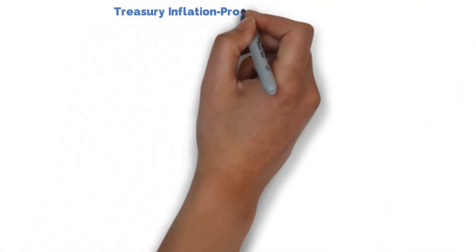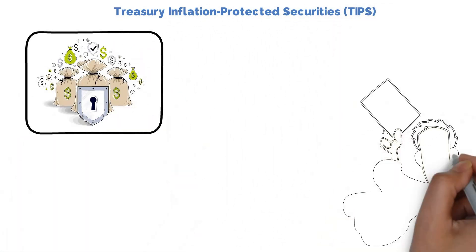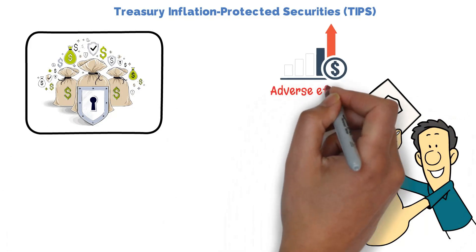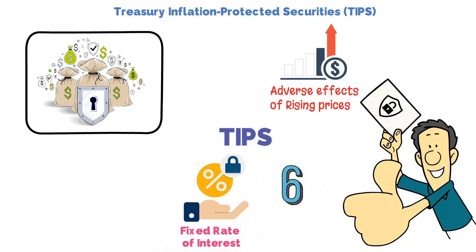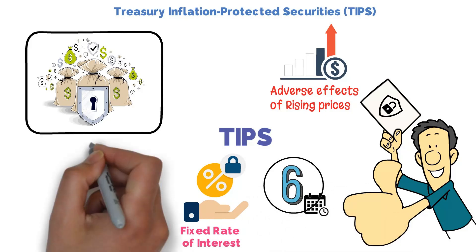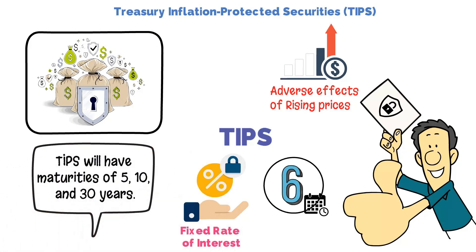Treasury Inflation Protected Securities, or TIPS, are a Treasury security indexed to inflation. They protect investors from the adverse effects of rising prices. Their principal increases or decreases depending on the current inflationary environment, following the Consumer Price Index, or CPI. TIPS pay a fixed rate of interest determined at the bond's auction on a 6-month basis; however, interest payment amounts vary since the rate applies to the adjusted principal value of the bond. TIPS will have maturities of 5, 10, and 30 years.